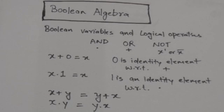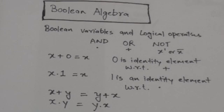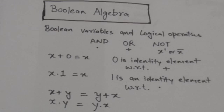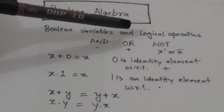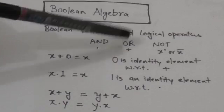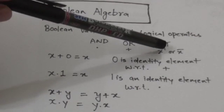Hello friends, welcome back to tutorials. In this tutorial we will learn about Boolean algebra. Boolean algebra deals with Boolean variables and logical operations which can be performed on these Boolean variables. In the previous tutorial we studied three basic logical operations: AND, OR, and NOT. The AND operation is denoted by the dot operator, OR is represented by the plus operator, and NOT is represented by a bar or prime over a binary variable.